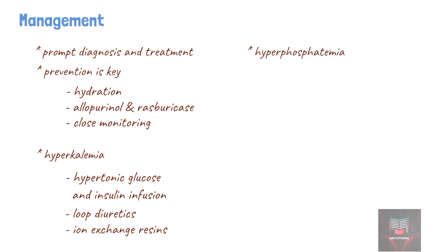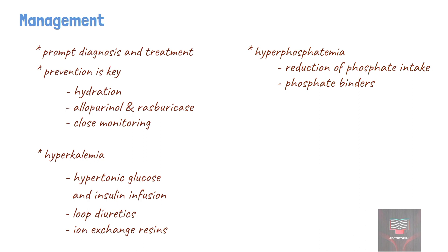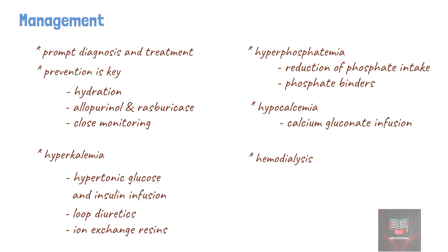Treatment of hyperphosphatemia involves reduction of phosphate intake and phosphate binders such as aluminum hydroxide. When recurrent hypocalcemia is present, a continuous intravenous infusion of calcium gluconate can be initiated. Hemodialysis should be considered for every patient with excessively elevated uric acid, phosphate, and potassium.